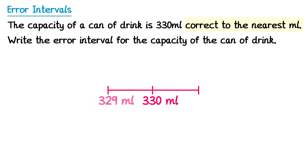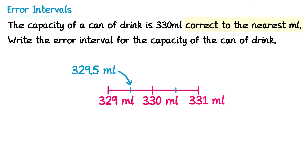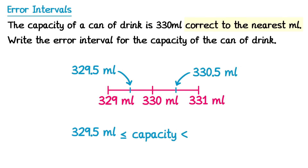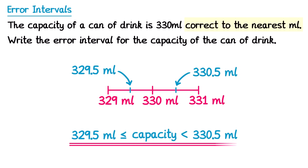But we're going to the nearest whole millilitre. So we go one millilitre below: 329, and one above: 331. The numbers halfway in between are 329.5 and 330.5. This time we haven't been given a letter, but we do know it's the capacity. So we could say: the capacity is in between 329.5 and 330.5.